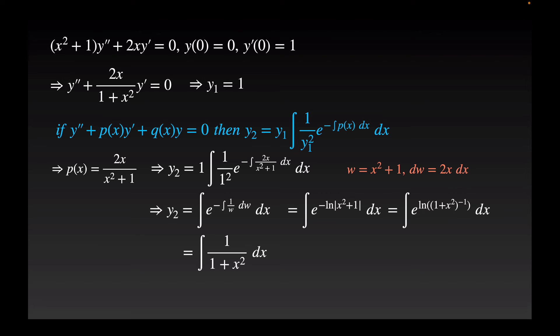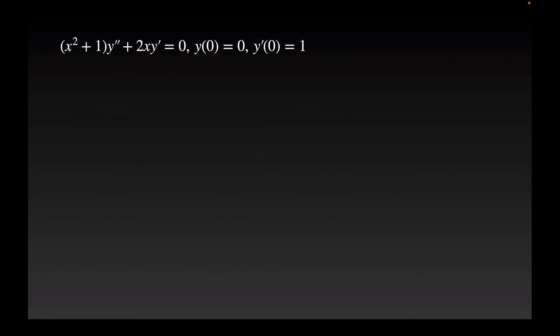This now is a very easily identified integral. It is just arc tan x. And now I've got my second linearly independent solution y2, and I can form the general solution y, which is c1 plus c2 arc tan x.